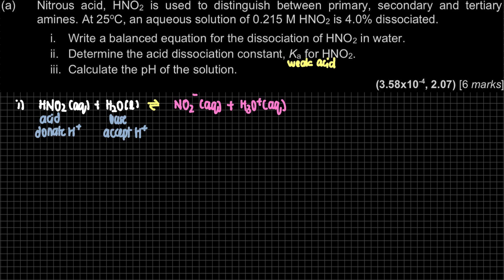Be mindful that for HNO2, when it donates, it's not only donating the H but also the positive charge, so what is left is a negative charge. The molecule is neutral because we have both positive and negative charges. That is the answer for question part i.